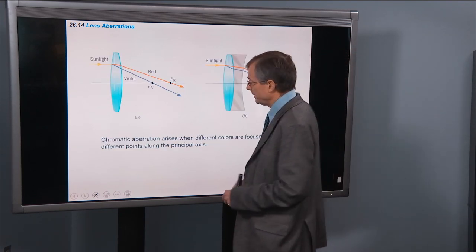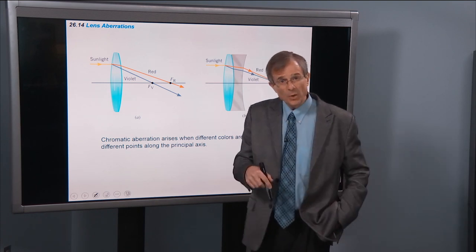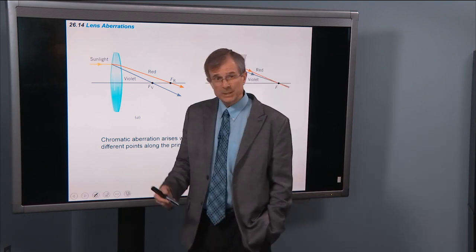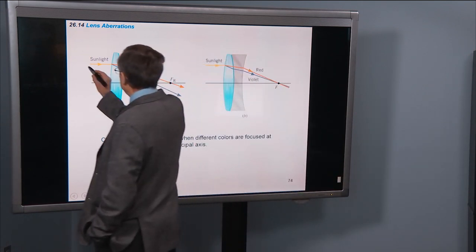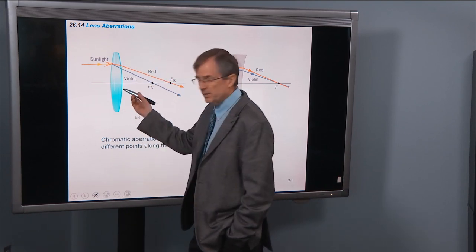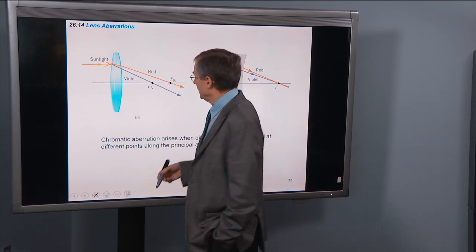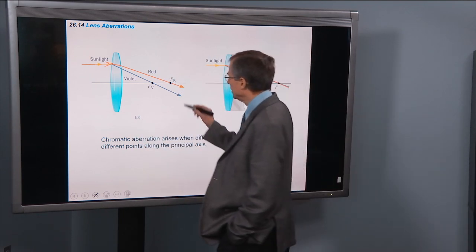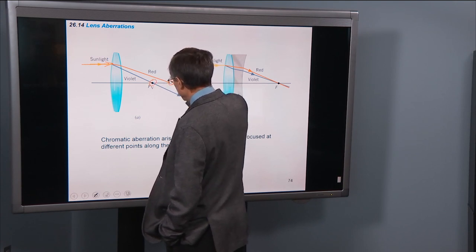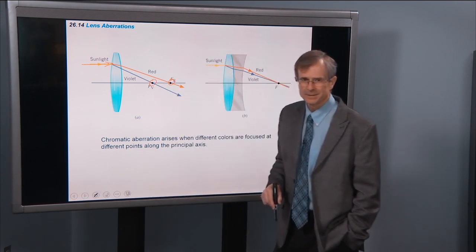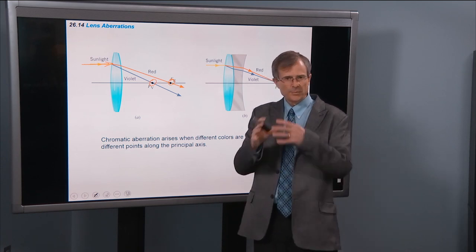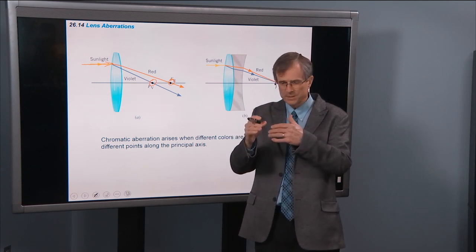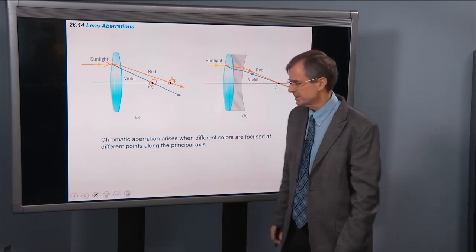The other thing that you have to deal with with lenses that you don't have to deal with with mirrors is chromatic aberration. And this is embarrassing too. If you have white sunlight coming in, this lens acts like a prism. That's the whole idea. Well, the index of refraction depends on the wavelength. And so the red is going to come to focus, or is going to image at a different place than the violet is. And so you can see through telescopic images, the fringes, you're looking at Venus and you see part of it's red and part of it's violet. It's kind of embarrassing.